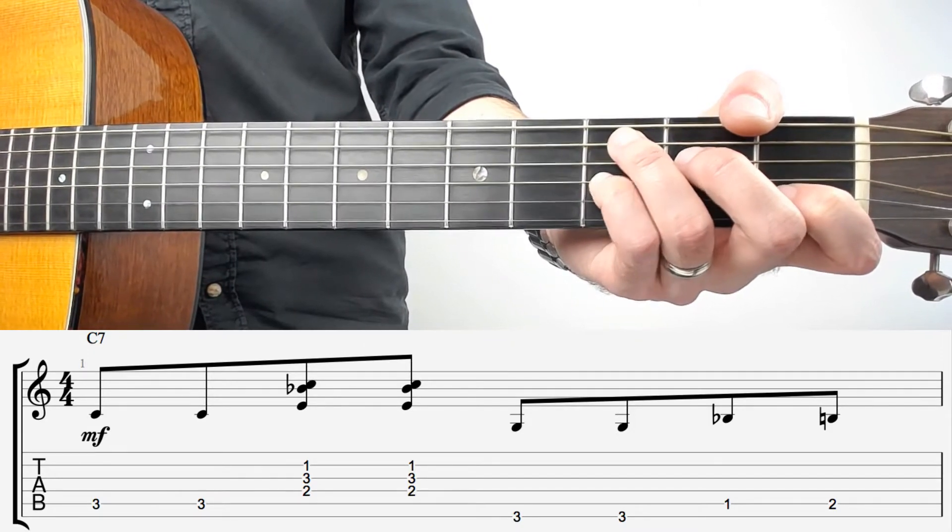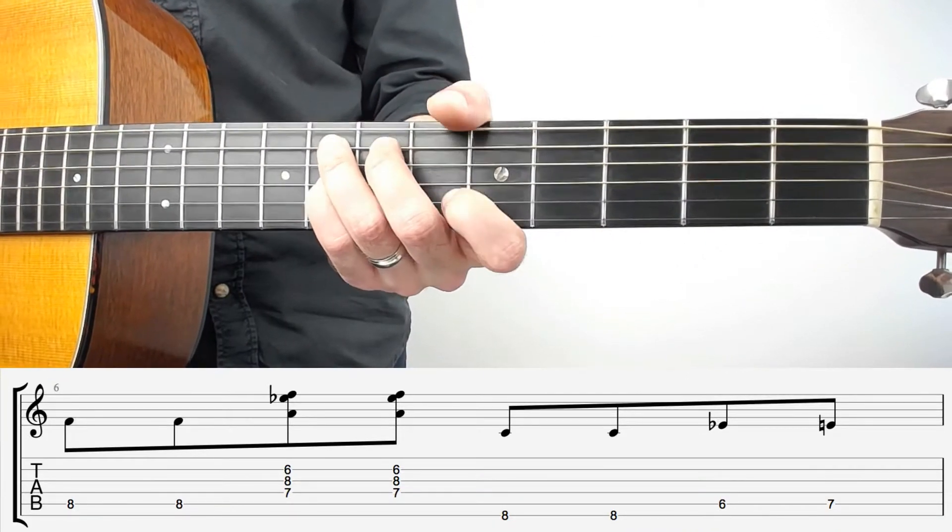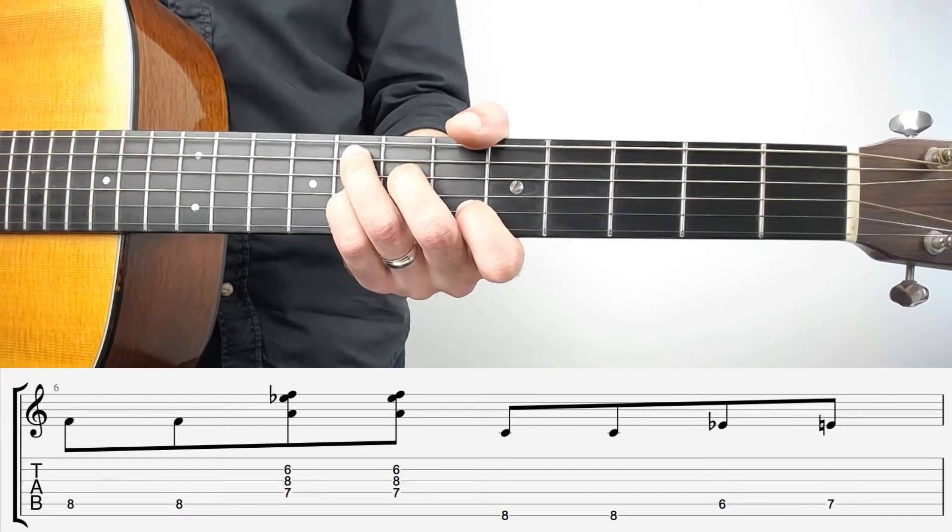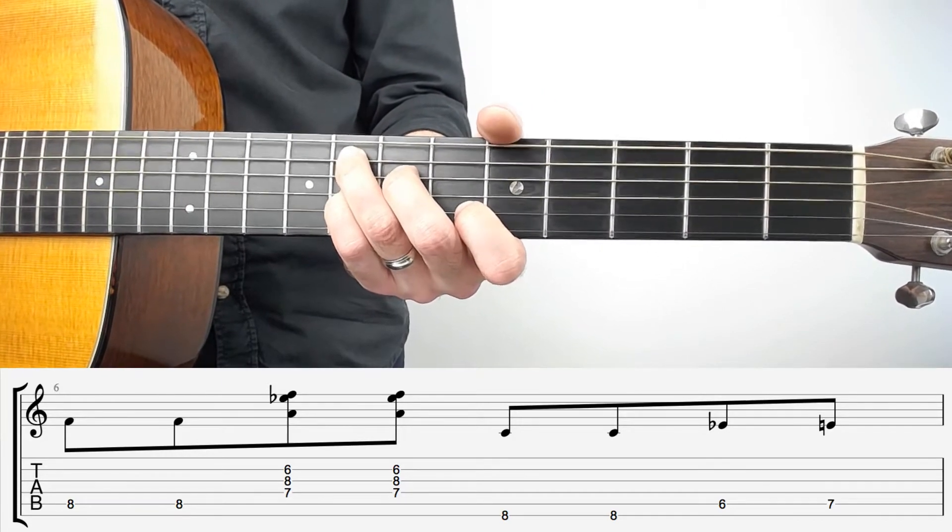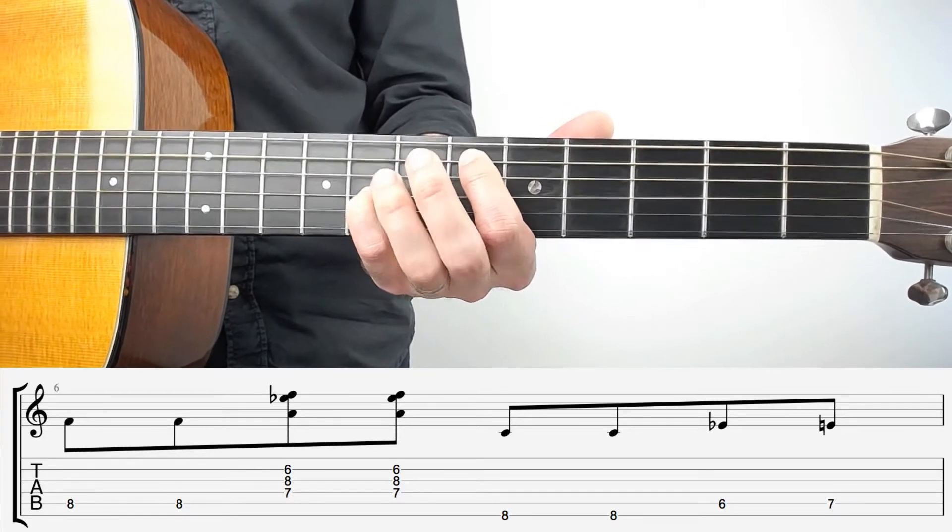We're going to take that shape again, make sure we keep that little finger down, so we're going to slide all the way up to fret 8. Now it is exactly the same shape here for this little riff, but now we're doing different strings. We're going 8, 8, strum strum, then up to 8 on the E twice and 6, 7 on the A.